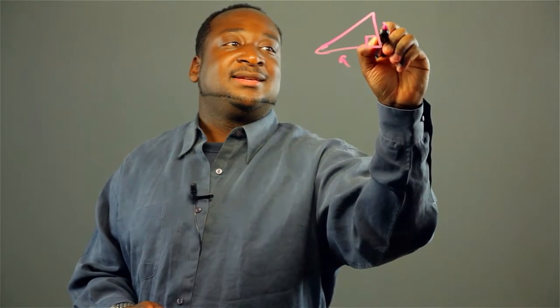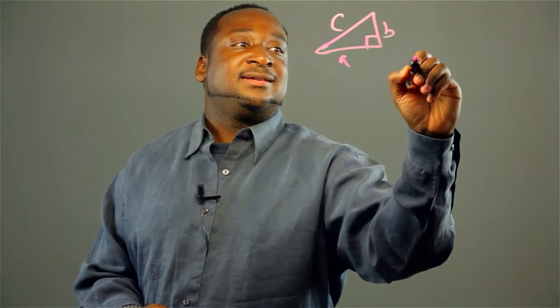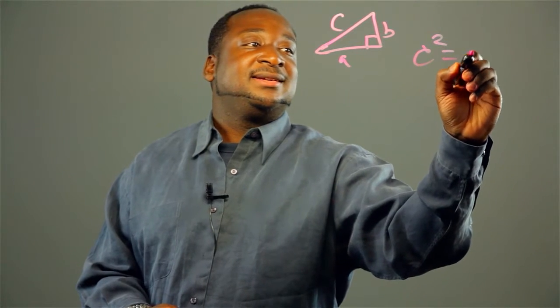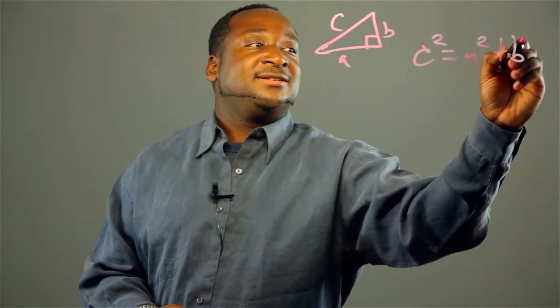Now here's what the Pythagorean Theorem is if you have a right triangle. It says that c squared equals a squared plus b squared.